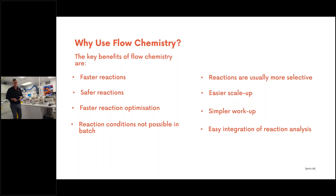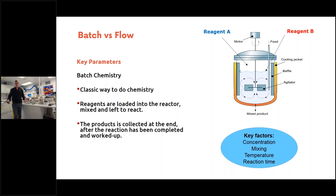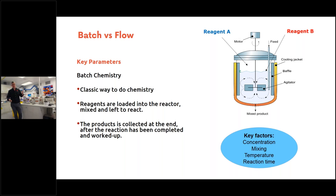To understand flow chemistry, we need to compare it with what we're doing at the moment. In traditional batch chemistry, we take our reactants, put them in a round-bottom flask or jacketed reactor, add reagents, heat, stir, and leave it to react. We then take the contents out, work them up, and extract the material. We think about reaction time, temperature, mixing, stoichiometric ratios, and concentrations.